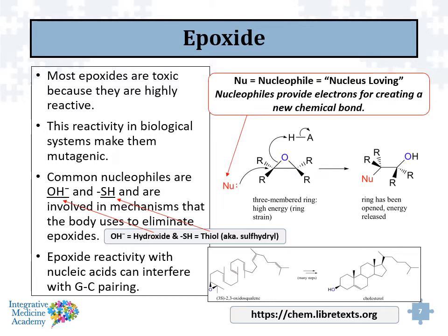Epoxides are toxic because they're highly reactive, meaning they can generate different reactive oxygen species and free radicals. This reactivity in biological systems makes them mutagenic — they can alter DNA. In chemistry, there are things called nucleophiles, which are nucleus-loving and provide electrons for creating a new chemical bond. In our body, thiol and hydroxide ions act as nucleophiles, and they can attack an epoxide ring and open it up, which helps render it less reactive.